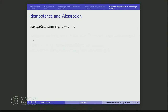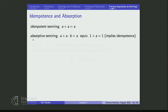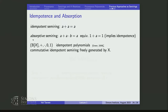In addition to these constructions, there are algebraic properties that lead to interesting semirings. One is idempotence — that is set semantics in a general sense. Another is absorption, from the theory of lattices. A semiring is absorptive if 1 + A = 1, which implies idempotence. So absorptive semirings are idempotence on steroids. These were very useful properties.